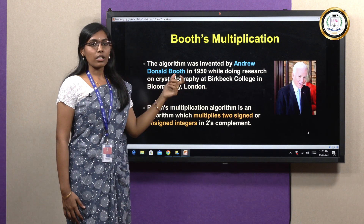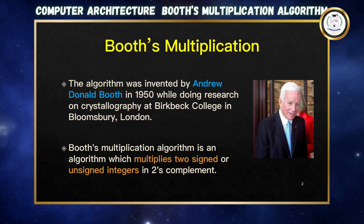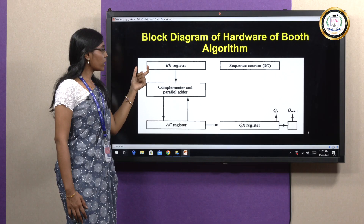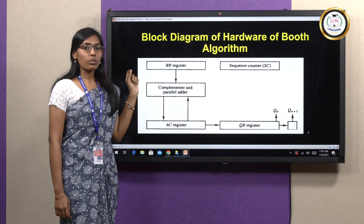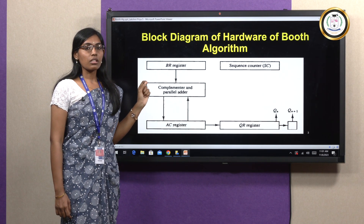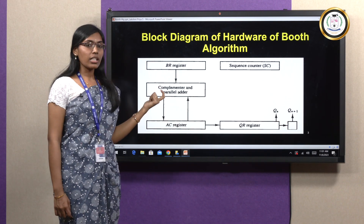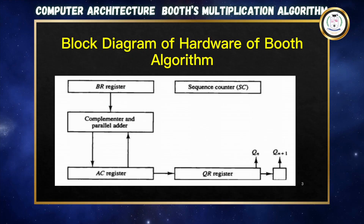This algorithm is calculated based on unsigned and signed two's complement integers. A block diagram has been developed consisting of two main registers: the BR register, which stores the multiplicand, and the QR register, which stores the multiplier. Along with an AC register and a sequence counter, the algorithm is calculated.